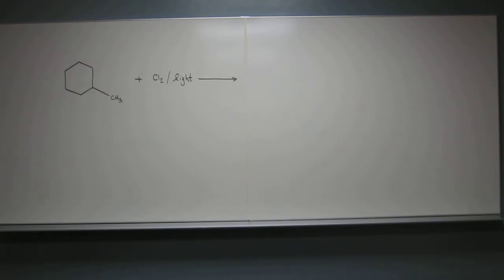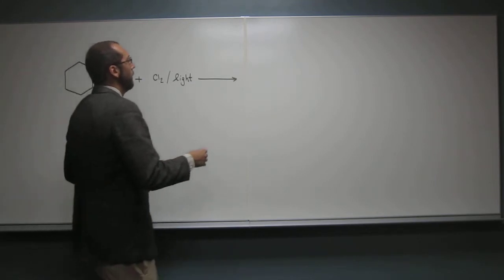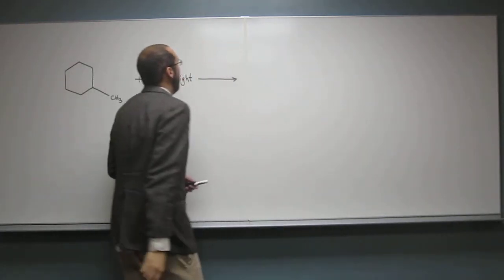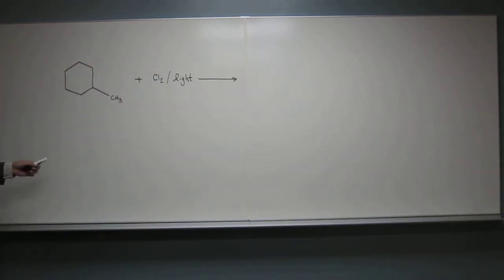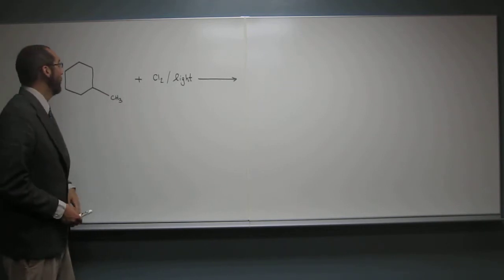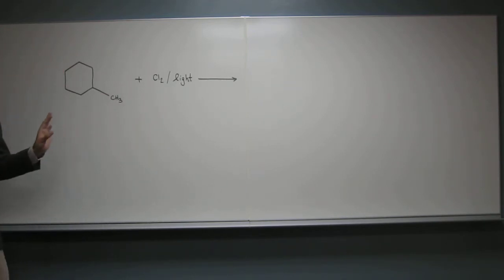So since it doesn't say only organic products, you're going to want to write the inorganic product that's also formed. But remember, the major product comes from the reaction of the halogen with the most substituted carbon.